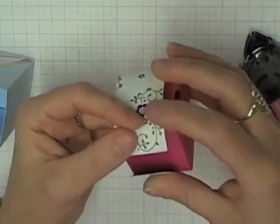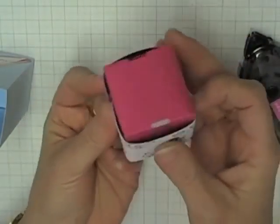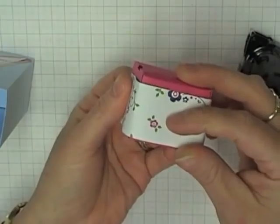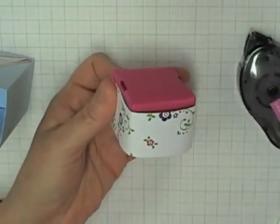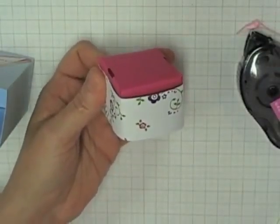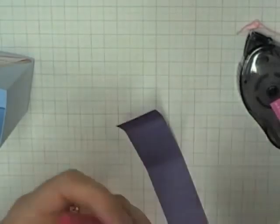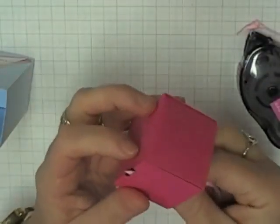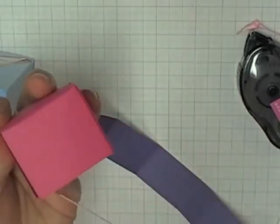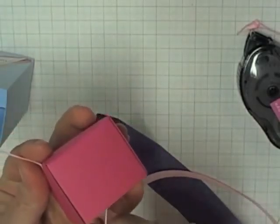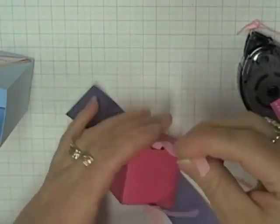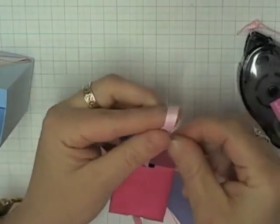Then basically you get your length of ribbon, thread it up through the two slots there and there.